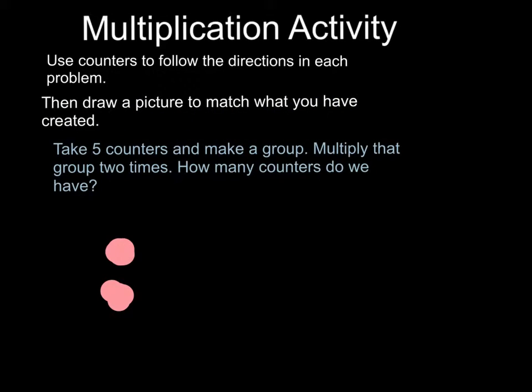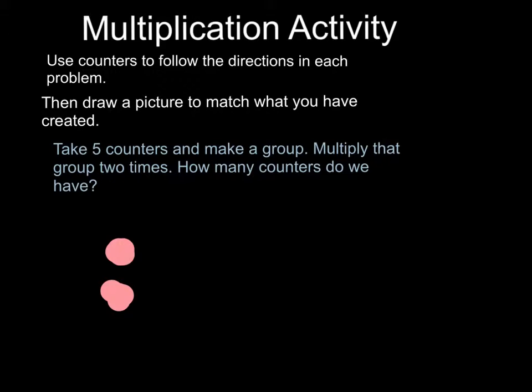Take five counters and make a group. Multiply that group two times. How many counters do we have?